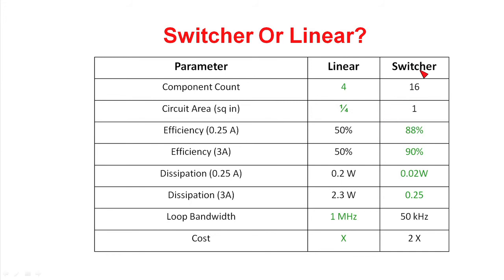This table presents a trade-off between the two different approaches, comparing the linear to the switcher. For component count, an integrated linear regulator is going to have significantly fewer components than the switcher, and since it has fewer components, it will also have a smaller footprint on your circuit board — showing a 4 to 1 difference both in component count and circuit area. On efficiency, the linear is only about 50% efficient, whereas the switcher can be as high as 90% and maintain that high efficiency even down to light loads. This translates into dissipation: at light loads, the linear regulator has 200 milliwatts while the switcher has 20; at heavy loads, the linear runs 2.3 watts of dissipation whereas the switcher has only a quarter watt.